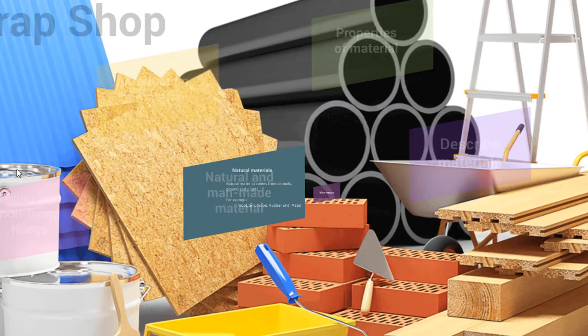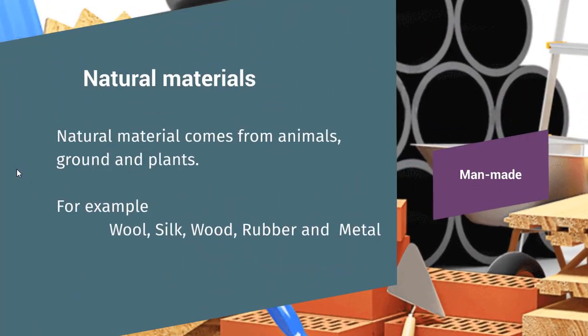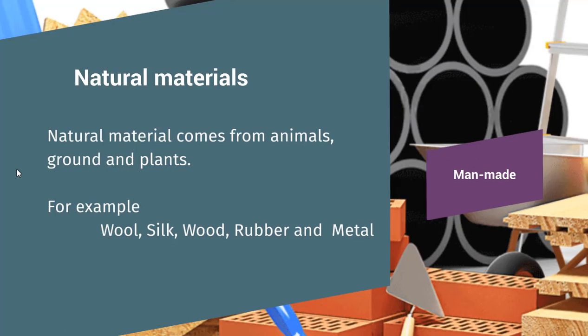Now we will discuss natural materials. Natural material comes from animals, the ground and plants. For example, wool, silk, wood, rubber and metal.